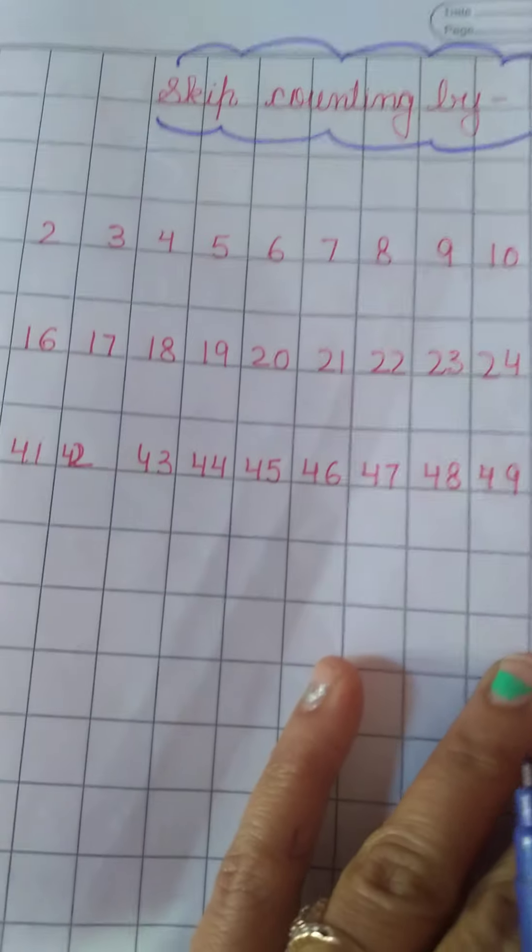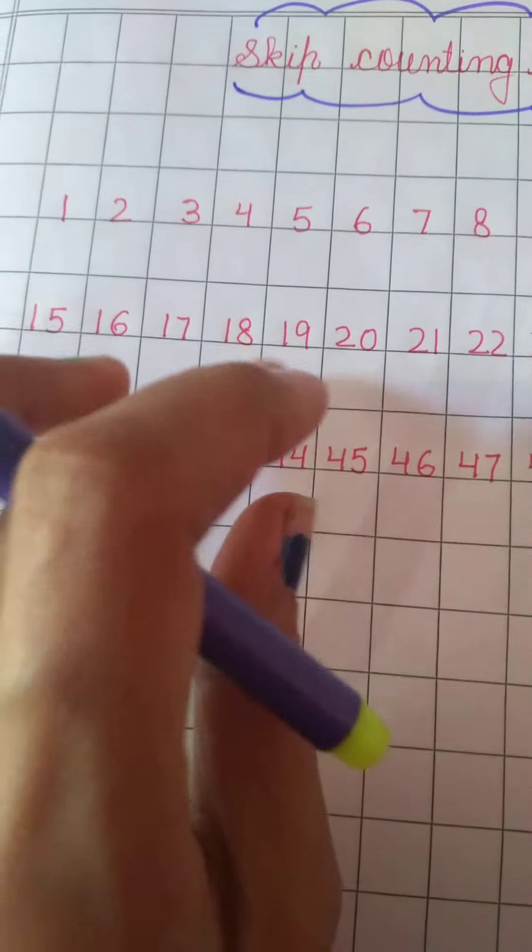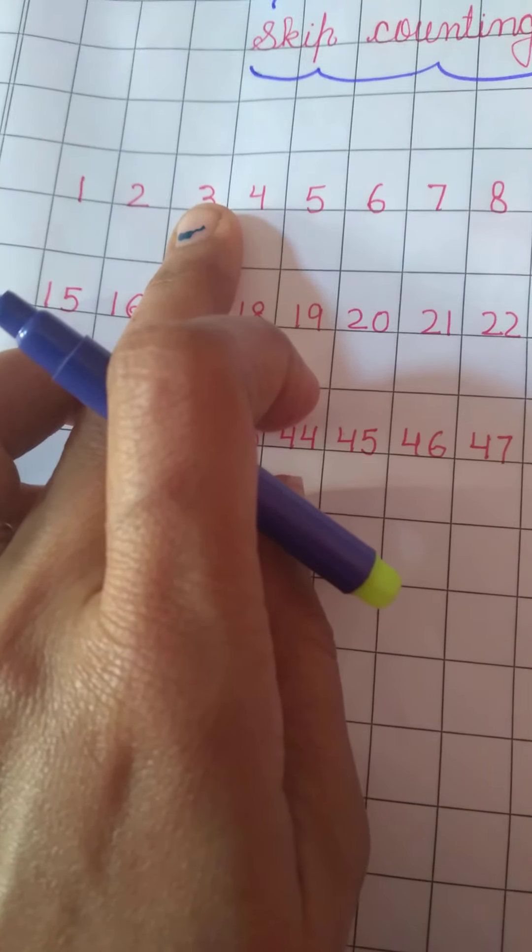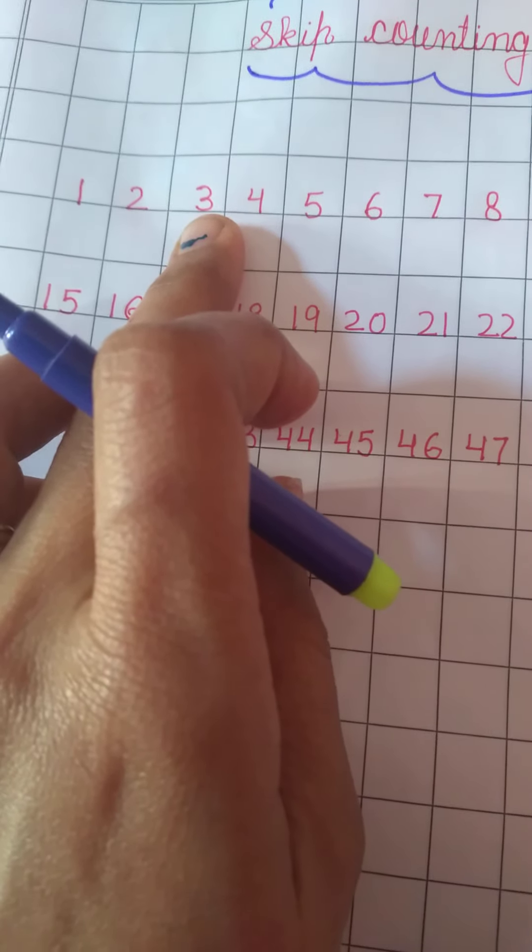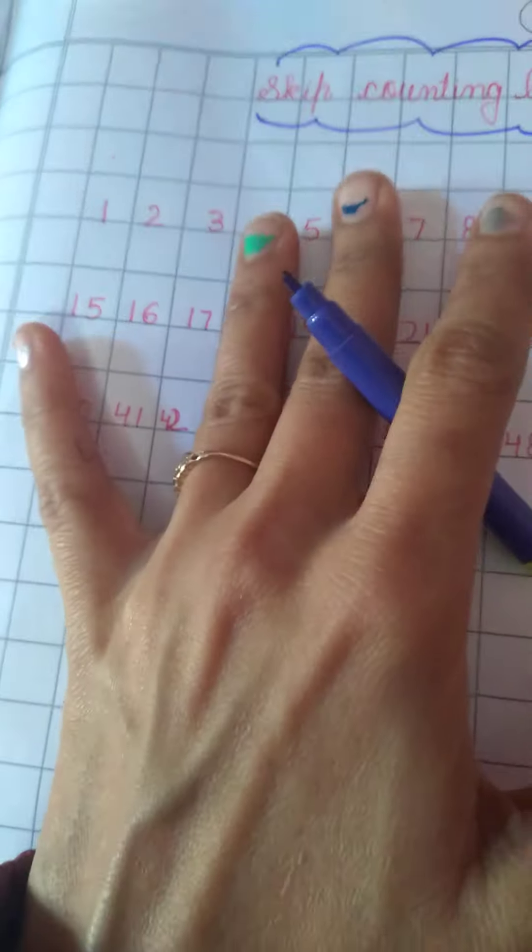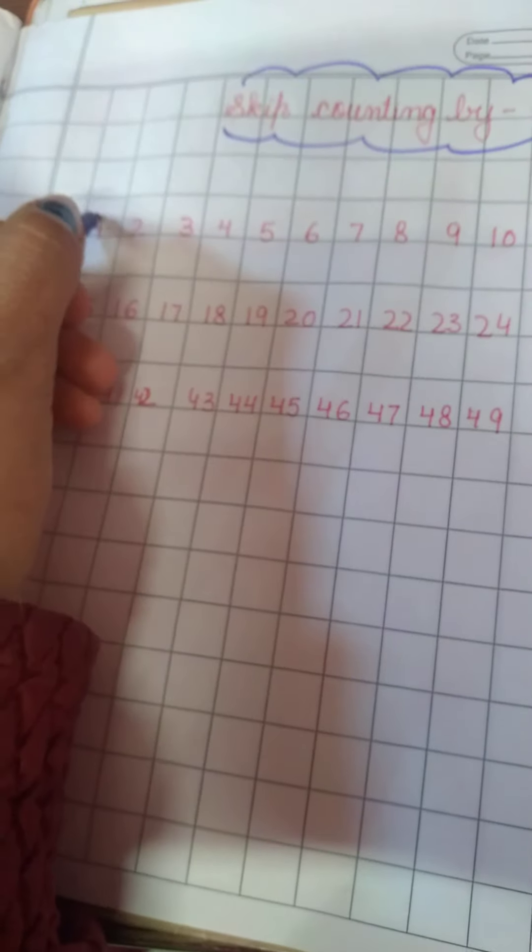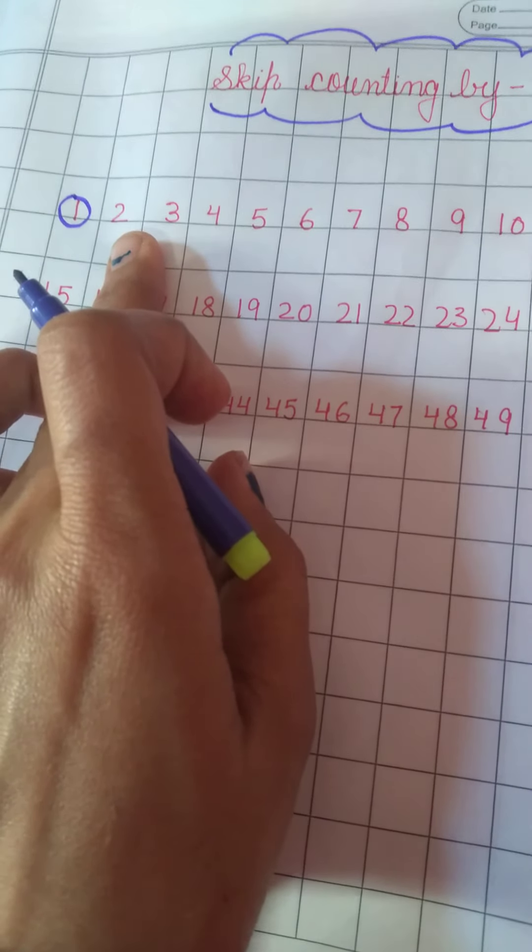In this what we have to do, as in skip counting by 3 we were jumping on third number. Now in this we have to jump on fifth number. Which number? Fifth number. Like 1 is the first number. Now after 1, you have to jump on fifth number.